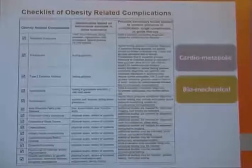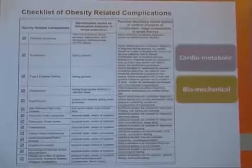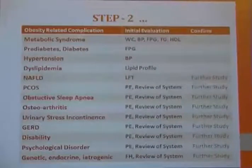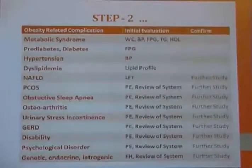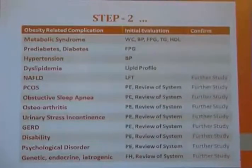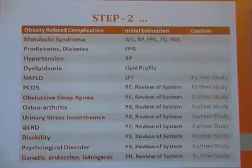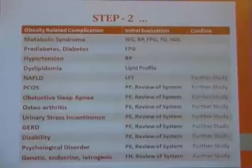There is a big checklist of obesity-related complications based on cardiometabolic and biomechanical complications. This includes metabolic syndrome, pre-diabetes, diabetes, hypertension, dyslipidemia, NAFLD, and PCOS, as discussed earlier. There is an initial evaluation, and for confirmation and better staging, there are many complication-specific criteria.